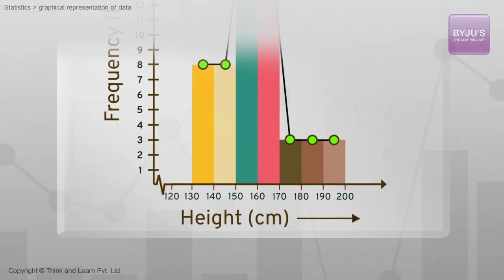This class interval will of course have a frequency of 0 since it is not represented in the table. We just have to mark the class mark for this group, that is 130 plus 120 by 2, which is going to be 125.